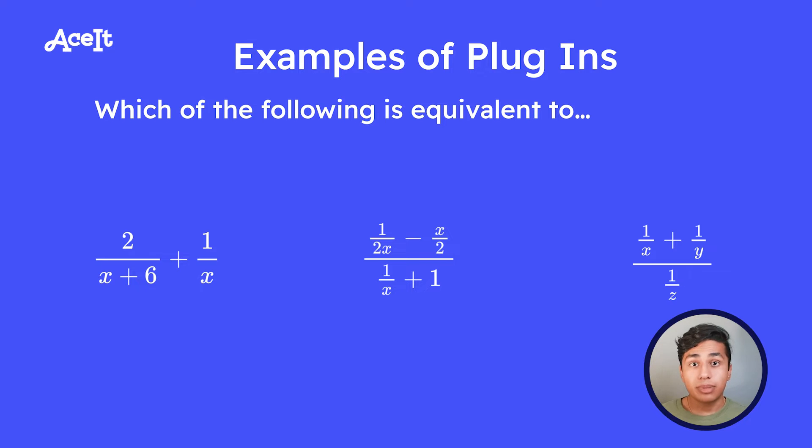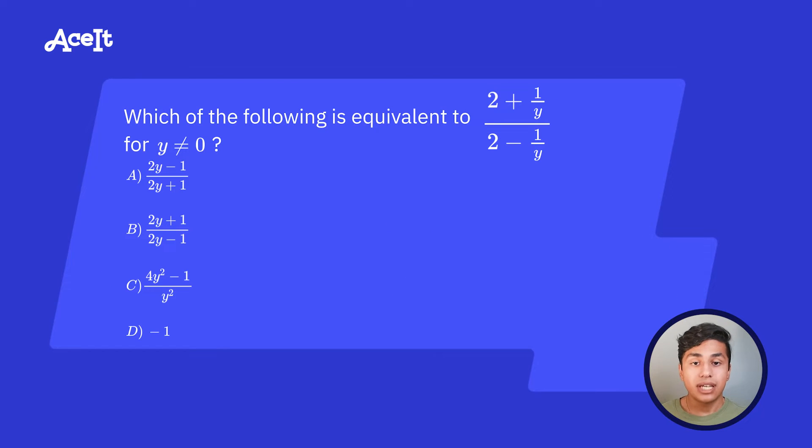Now I know I've been talking a lot about the plugin method, but I haven't really explained what it means yet. So as the name suggests, you're going to take a number and substitute it in for the variable. And then you're going to find out what the value of that original expression is. So now you're going to plug in that same number into each of the answer choices and see which answer choice gives you the same as your original expression. So let's take a look at this example problem here.